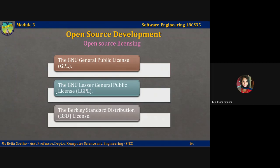The second model is the GNU Lesser General Public License, or LGPL. This is a variant of the GPL where you can write components that link to open source code without having to publish the source of those components. However, if you change the licensed component itself, then you must publish that change as open source.